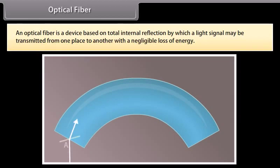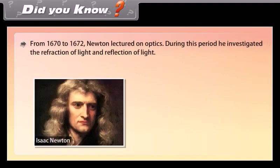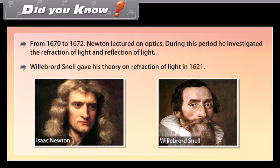Optical fiber: An optical fiber is a device based on total internal reflection by which a light signal may be transmitted from one place to another with negligible loss of energy. Historical note: From 1670 to 1672, Newton lectured on optics and investigated refraction and reflection of light. Willebrord Snell gave his theory on refraction of light in 1621.